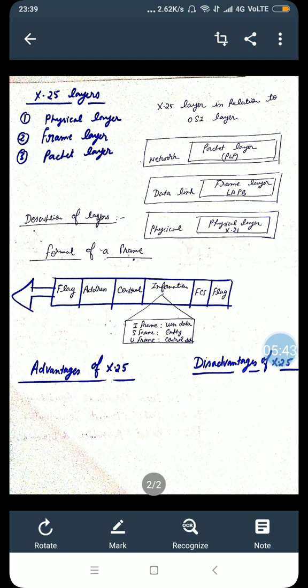U-frames are used to set up and disconnect the links between DTE and DCE. The three packets most frequently used by LAPB in this category are SABM, UA and DISC. Frame layer phases.